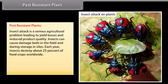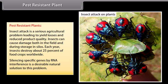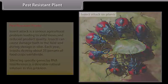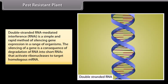Pest-Resistant Plants: Insect attack is a serious agricultural problem leading to yield losses and reduced product quality. Insects can cause damage both in the field and during storage in silos. Each year, insects destroy about 25% of food crops worldwide. Silencing specific genes by RNA interference is a desirable natural solution to this problem. Double-stranded RNA-mediated interference, RNAi, is a simple and rapid method of silencing gene expression in a range of organisms. The silencing of a gene is a consequence of degradation of RNA into short RNAs that activate ribonucleases to target homologous mRNAs.